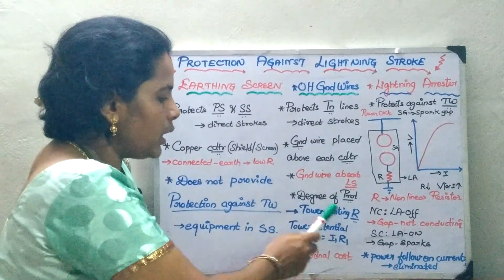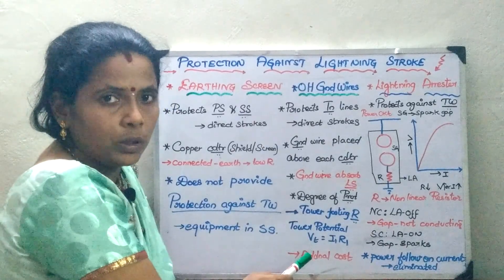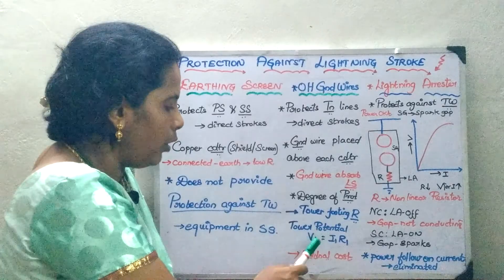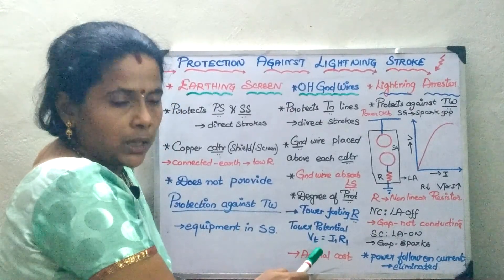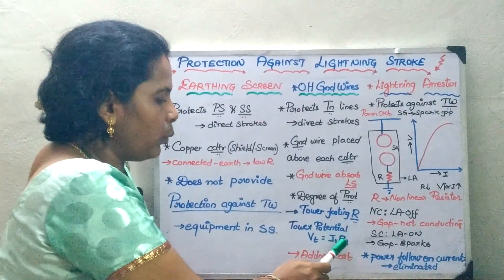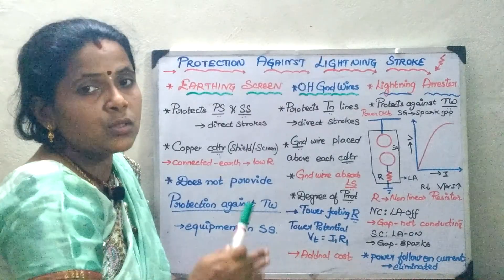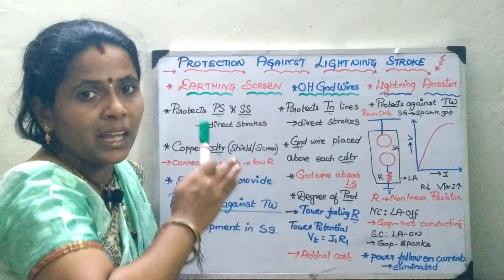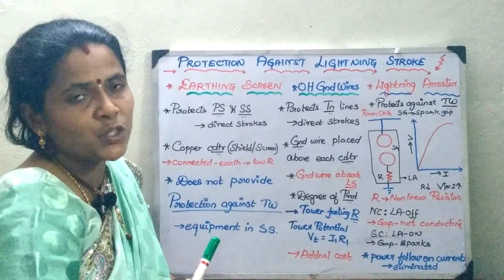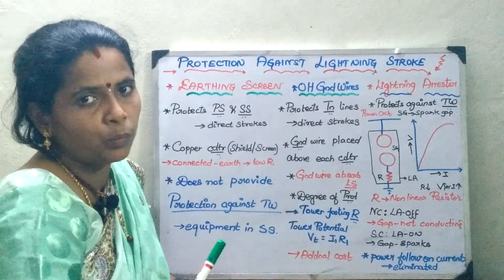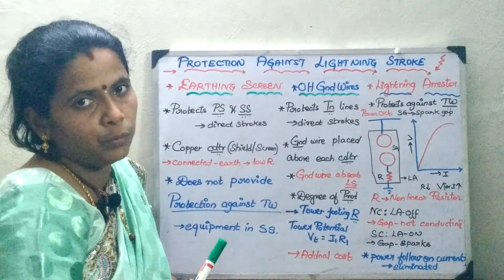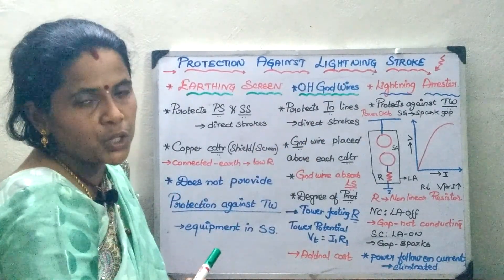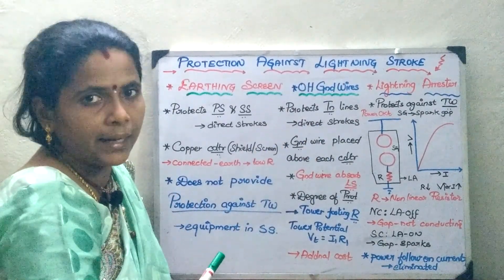Whenever there is going to be a voltage surge, it is going to raise the voltage potential to a value of VT. This VT is nothing but the product of I1 into R1. The only drawback in case of overhead ground wires is that it results in additional cost when this ground wire is laid. Otherwise, this is a useful protection for transmission lines against direct strokes.